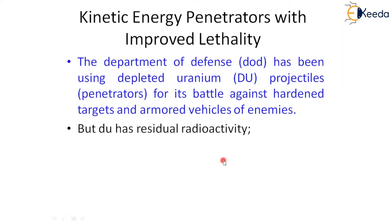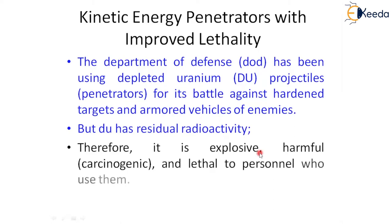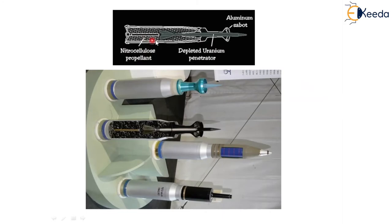Depleted uranium (DU) has residual radioactivity, which is a disadvantage. Sometimes it can be explosive or harmful to the personnel using it, so there are a lot of hazardous concerns. Precautions must be taken, otherwise it cannot be used safely. You can see here there is a nitrocellulose propellant — once the degree is set, the entire depleted uranium penetrator goes to the target, hits it, and destroys it.